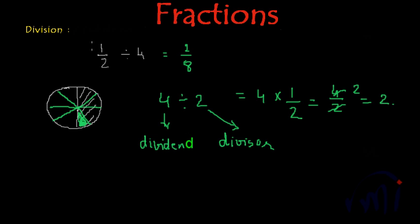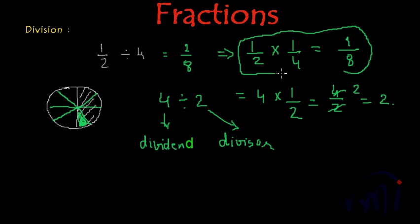Similarly here 1 by 2 is dividend and 4 is the divisor. That means 1 by 2 will be multiplied by the inverse of divisor which is 4 in this case, and inverse of 4 will be 1 by 4. And now if you multiply you will get 1 times 1 is 1 and 2 times 4 is 8. So using this method also you are getting the same result. What is the method? Multiply the dividend by the inverse of the divisor and then you will get the result.